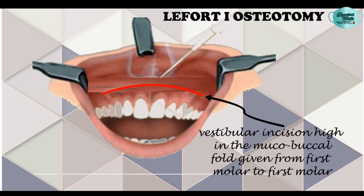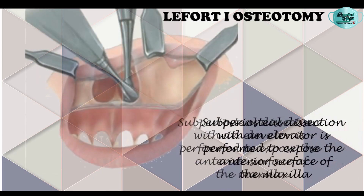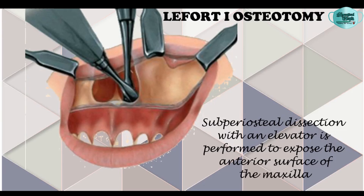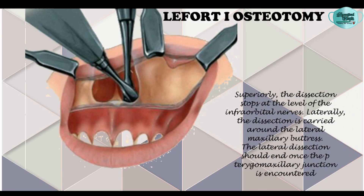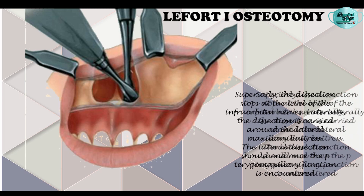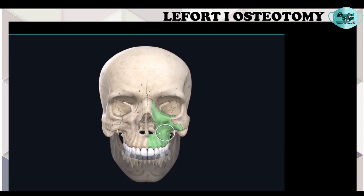After the incision, dissection is done to expose the anterior surface of the maxilla. This dissection is carried superiorly to the level of the infraorbital nerve, and laterally it is done around the lateral maxillary buttress until the pterygomaxillary junction is reached.